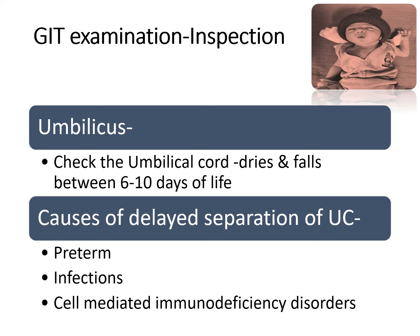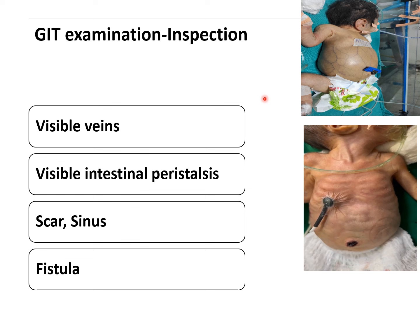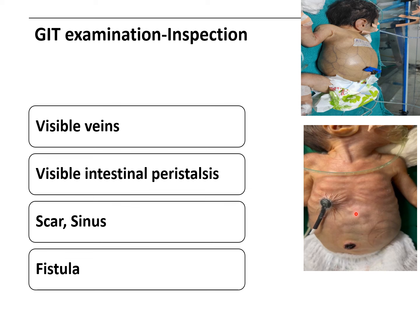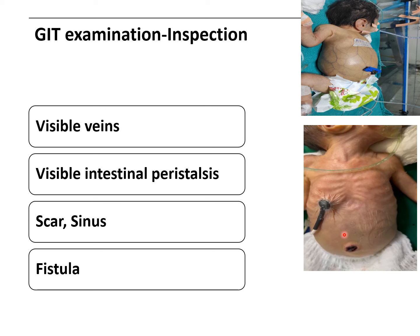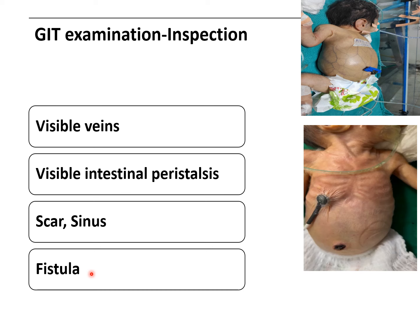Then we should see any visible veins as you can see in this image. Any visible intestinal peristalsis — as you can see in this video, the baby has visible peristalsis movement over the abdomen. Any scar, sinus, or fistula if present should be mentioned.